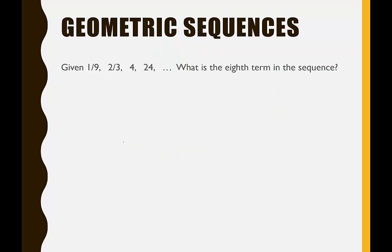In our next example, we want to find the 8th term in the sequence: 1/9, 2/3, 4, 24. Again, we're going to use the formula: a sub n is equal to a sub 1 times r to the n minus 1.